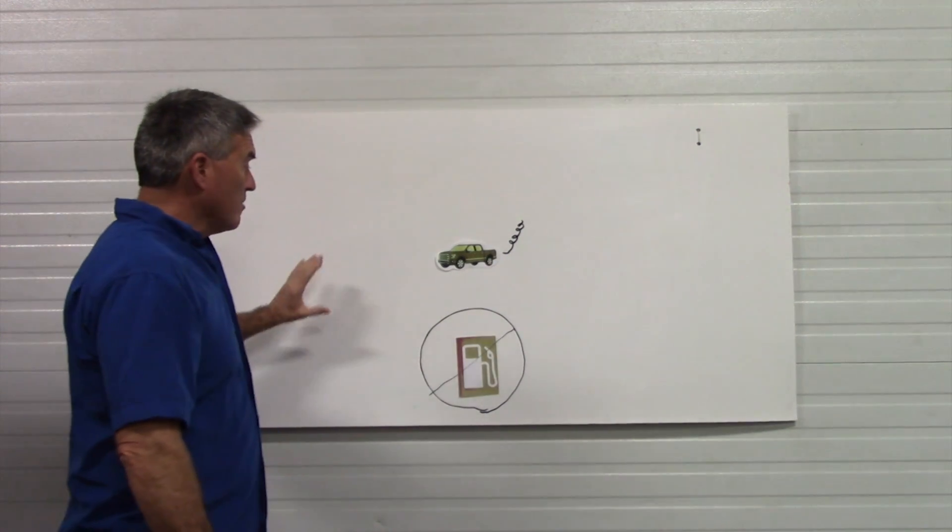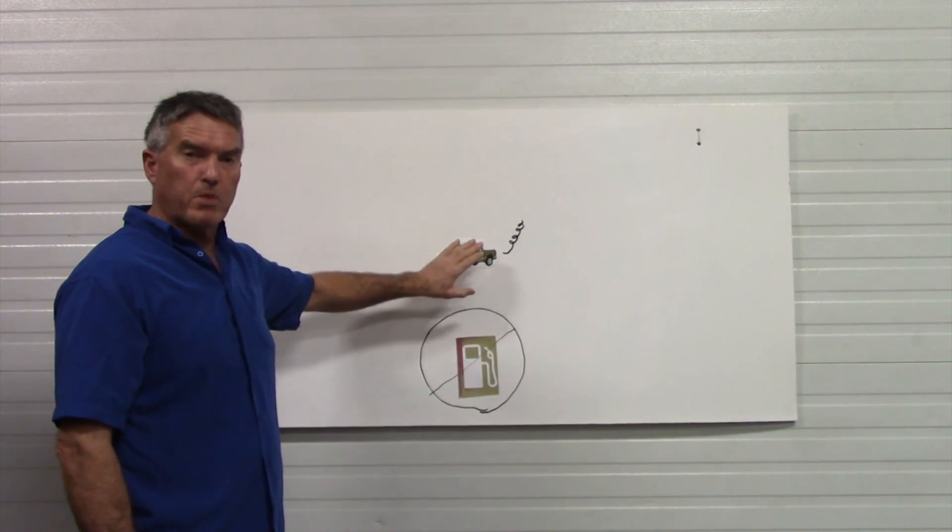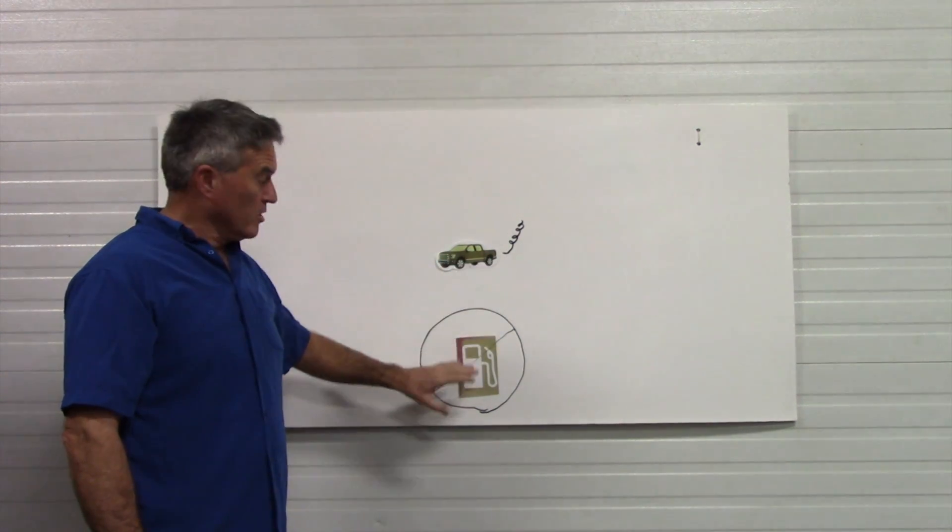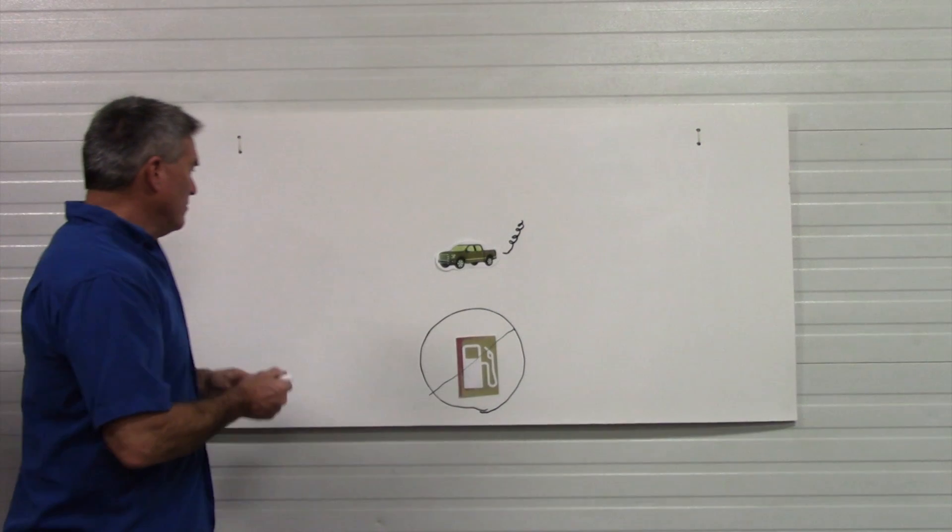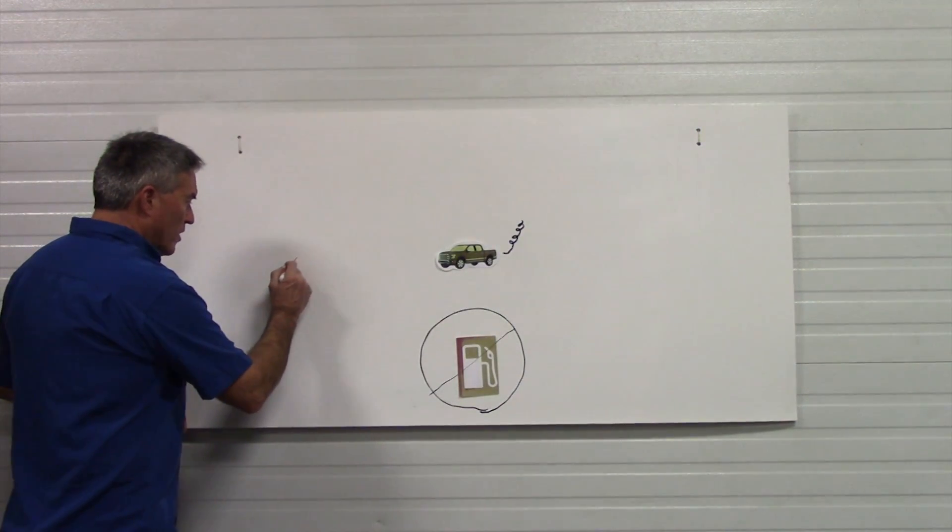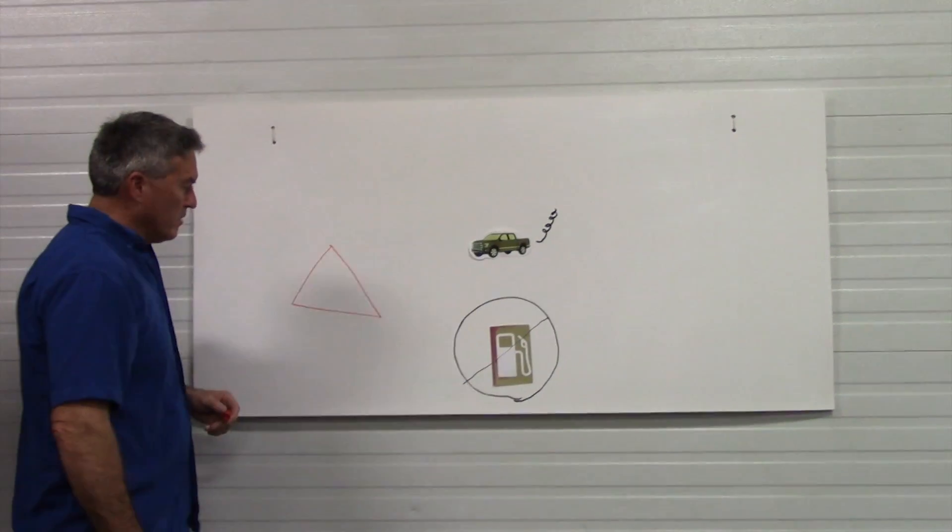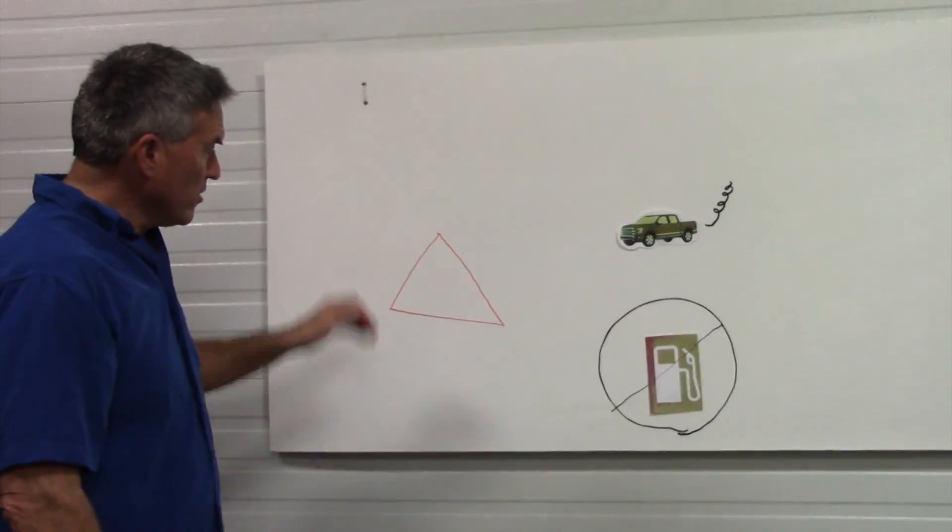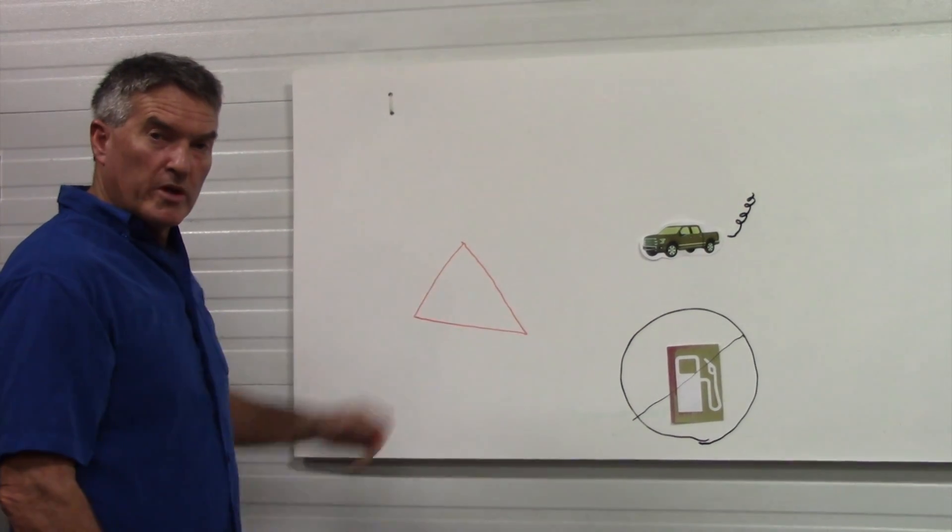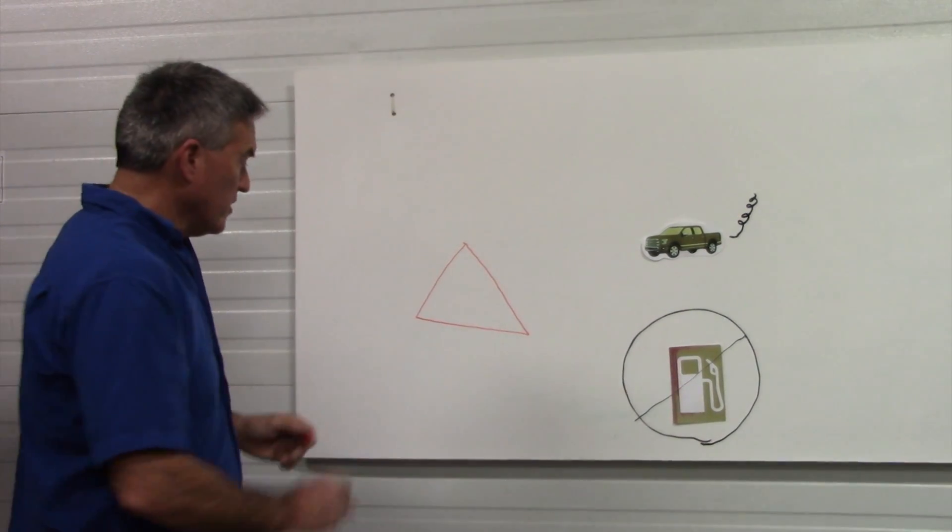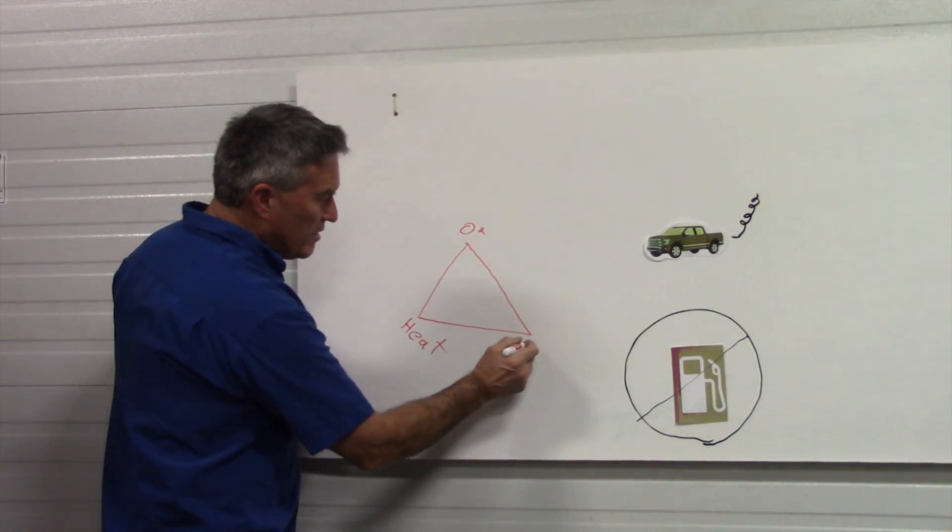First, we have to understand combustion. This fuel is being burned inside this vehicle through a state of combustion. For many years, scientists explained combustion as a fire triangle. They called it a fire triangle because at one point, they decided we needed three things: we need heat, we need air or oxygen, and we need a fuel.